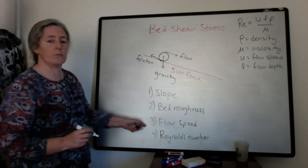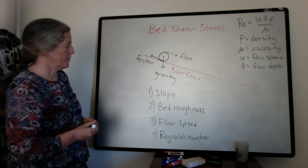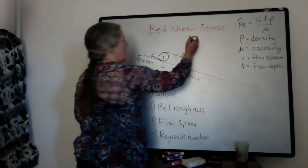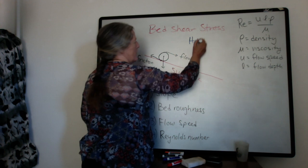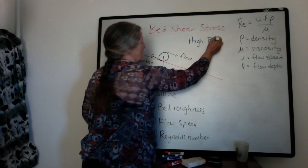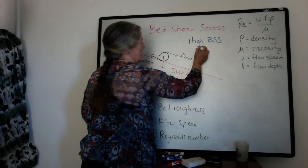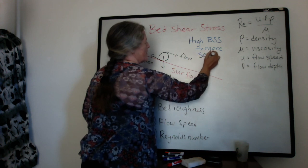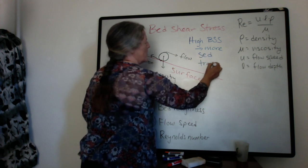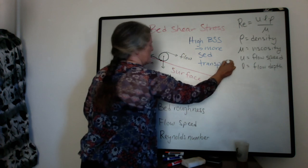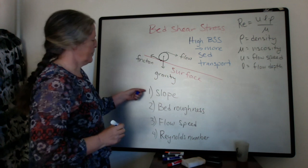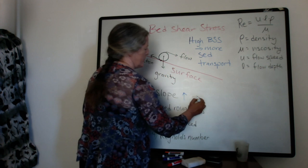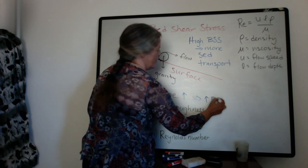So the Reynolds number also depends on flow speed. So these two are closely related to each other. But in general, as an overarching principle, we can do a higher bed shear stress leads to more sediment transport. And the bed shear stress increases with slope. So increasing slope produces higher bed shear stress.